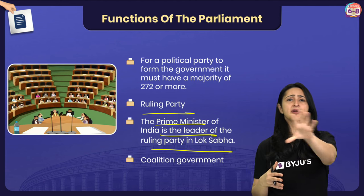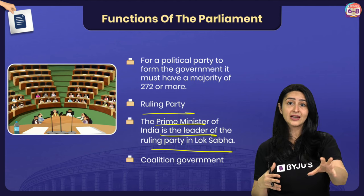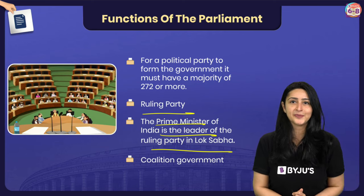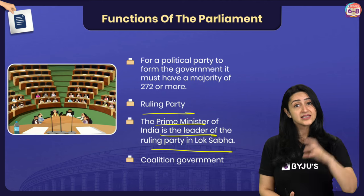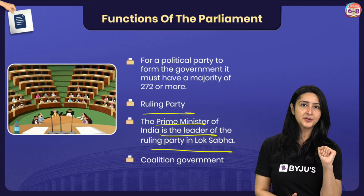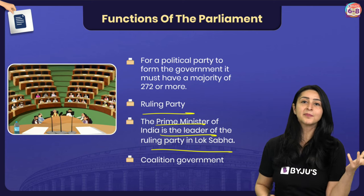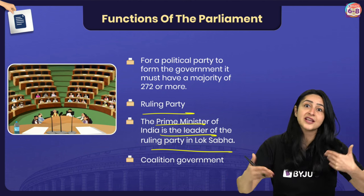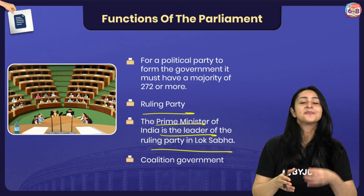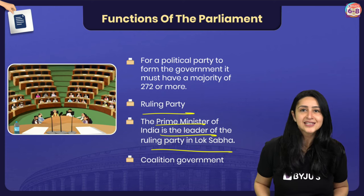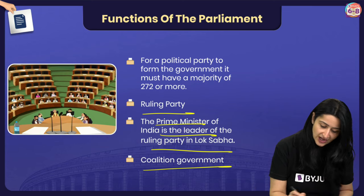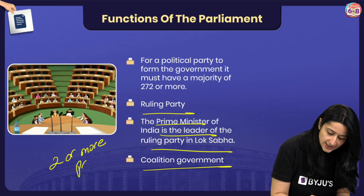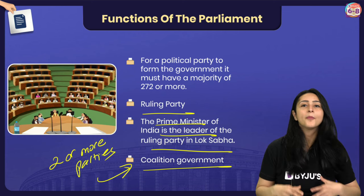The Prime Minister selects the executive from MPs belonging to the ruling party. These ministers take charge of different departments of government functioning, like health, education, finance, and more. Is it always necessary that a single political party wins the majority? No. Sometimes no political party wins more than 272 seats, and in such cases, two or more parties come together and form a coalition government.